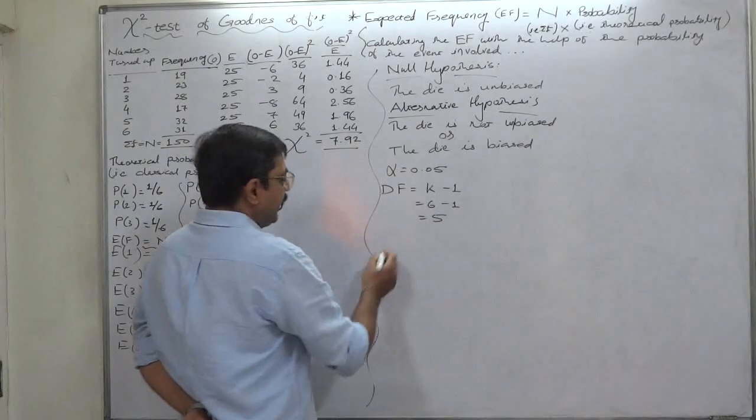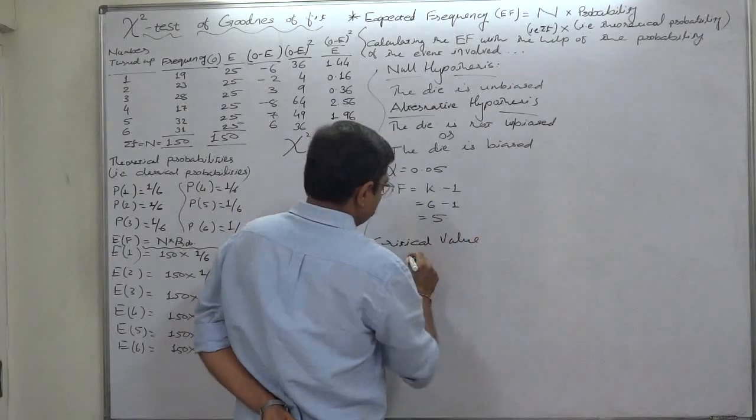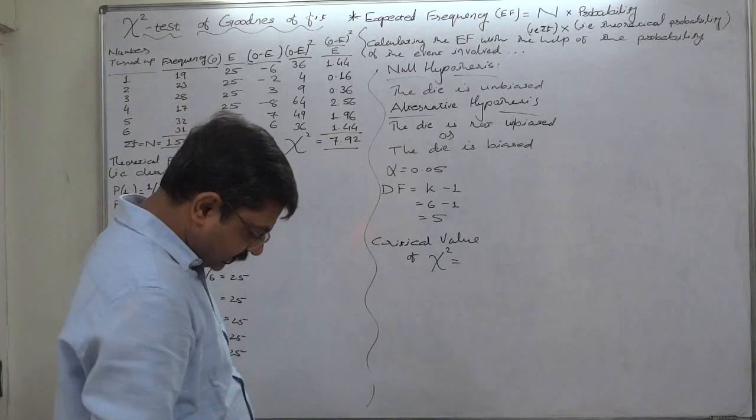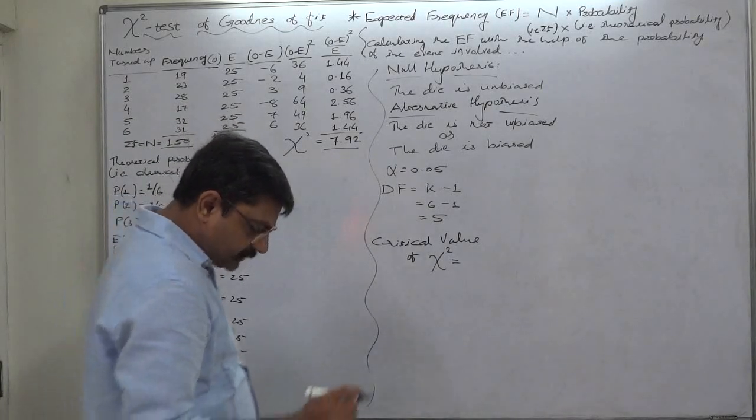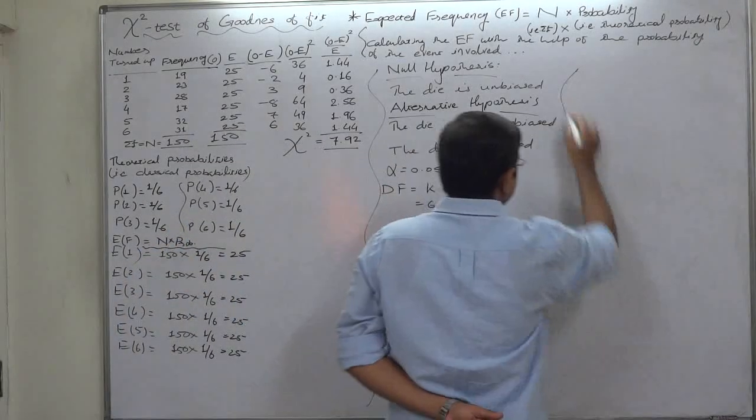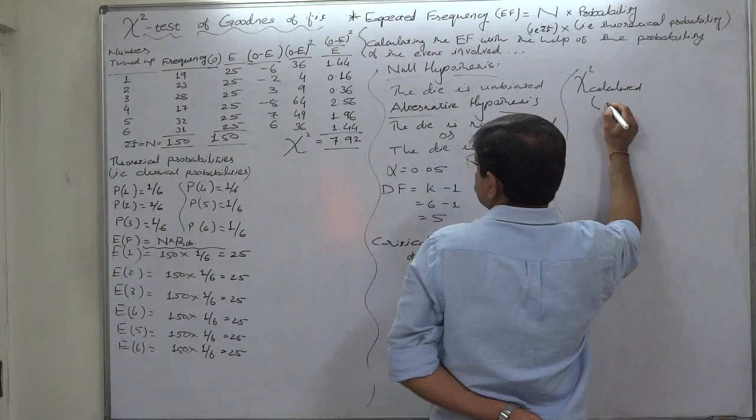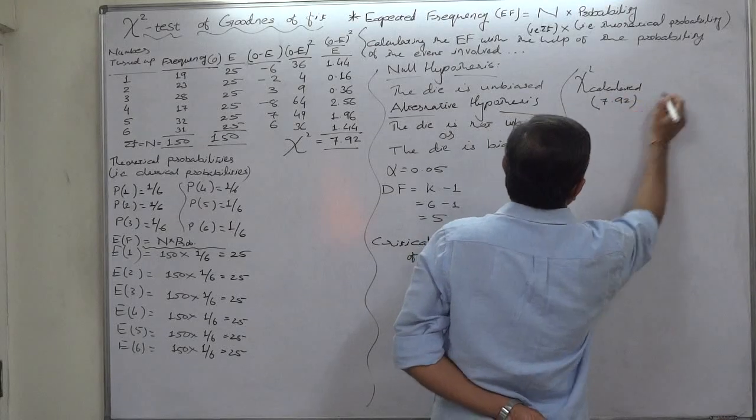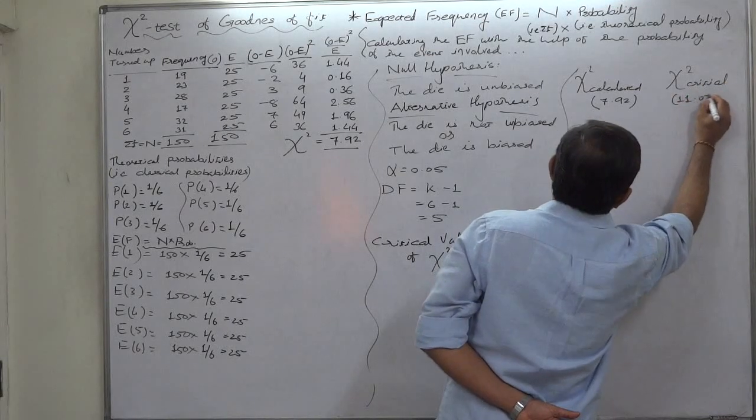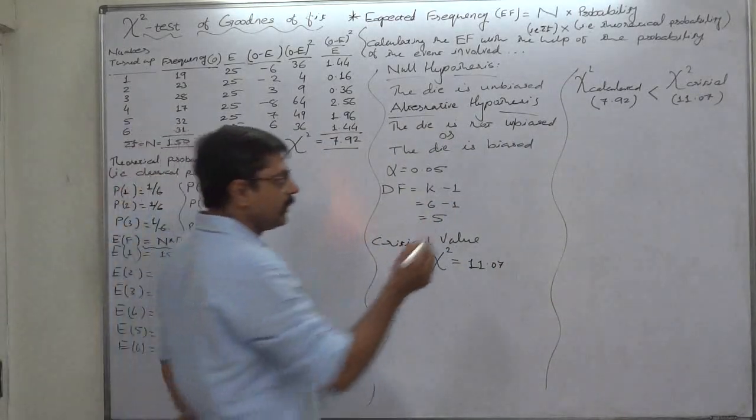Critical value for 5 degrees of freedom at 5 percent level of significance is 11.07. So let's compare the results. Chi-square calculated is 7.92, chi-square critical is 11.07. So the calculated value of chi-square is less than the critical value.